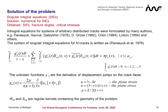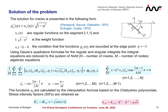Solution of the problem. For the solution, a system of singular integral equations will be used. We have n cracks and n singular integral equations with respect to unknown derivatives of displacement jumps on the crack faces. The right-hand side consists of known loading functions shown on the previous slide. R and S are regular kernels containing the geometry of the problem. The singular integral equations are solved numerically using a method where unknown functions are presented as a regular function multiplied by weight functions that take into account the square root singularity at crack tips. For edge cracks, one of these singularities is removed and additional conditions must be taken into account.